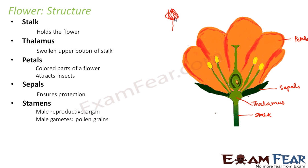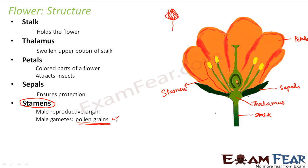Next is the stamen, which is the male reproductive organ. These structures have a green rod-like stalk with a yellow head — these are the stamens. This structure actually produces the male sex cells, or male gametes. The male gametes in a flower are the pollen grains. So the stamens produce pollen grains, and we will study the structure of the stamen in the next slide.